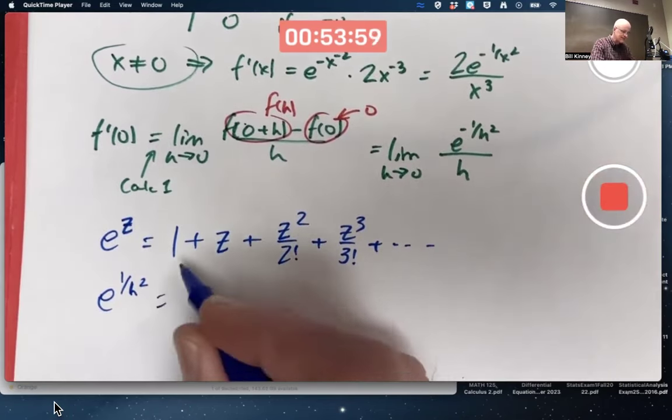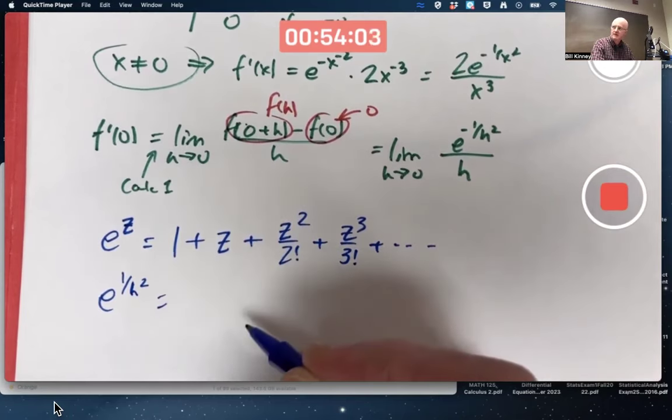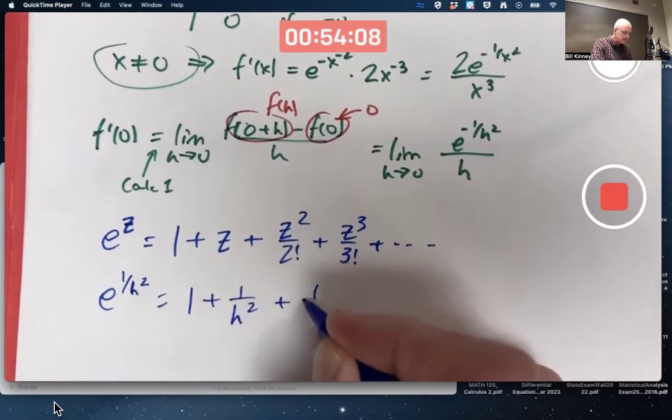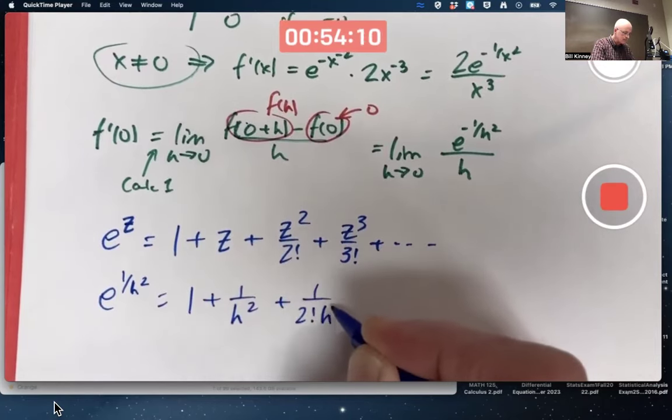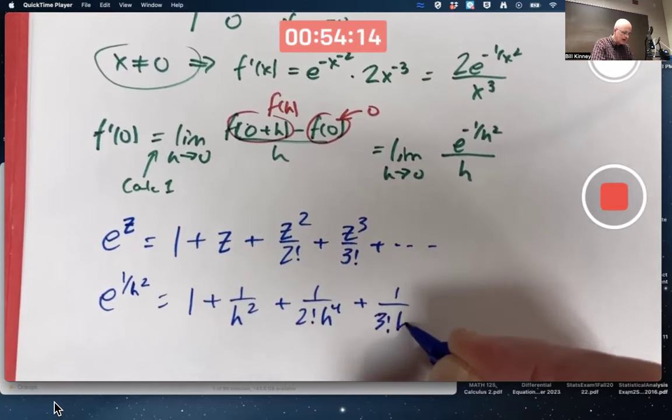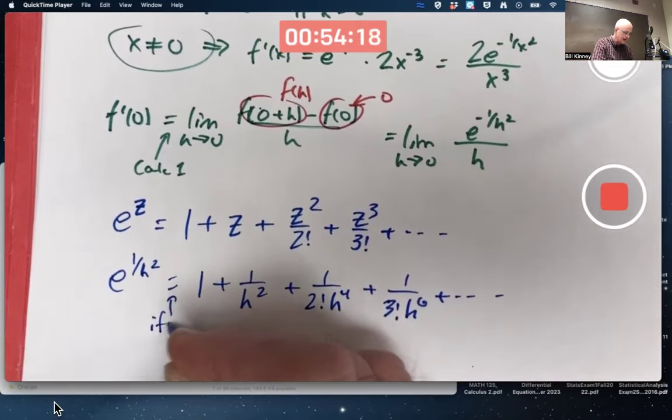What I'm going to do here is in this expression, I'm going to replace all the z's with one over h squared. This is fine as long as I'm not dividing by zero. This is fine as long as I'm not dividing by zero, if h is not zero.